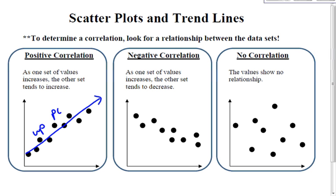So this is known as a positive correlation, just like it would be a positive slope up from left to right.